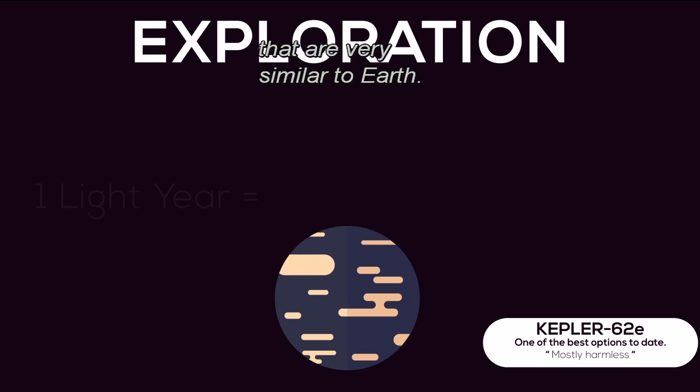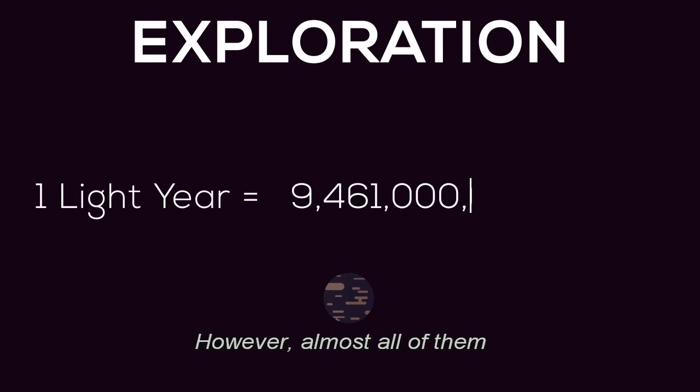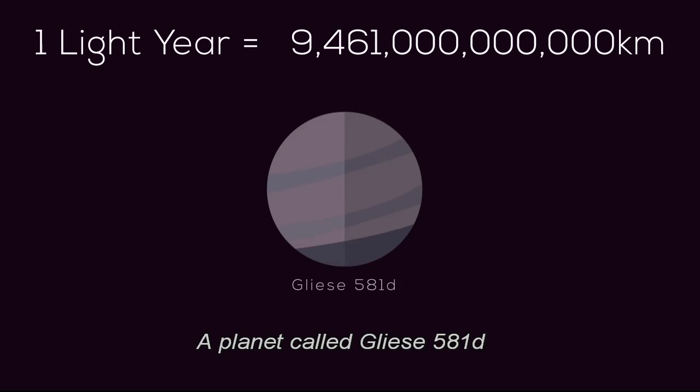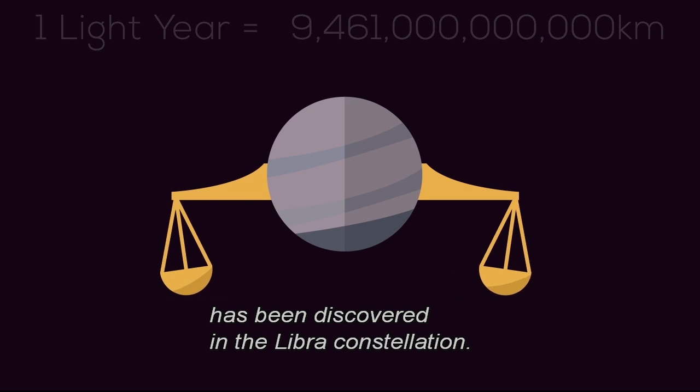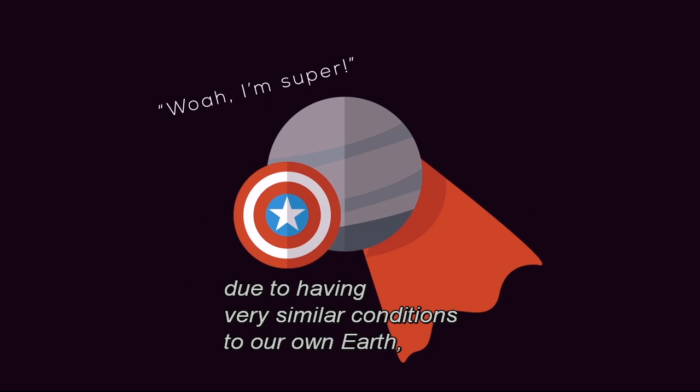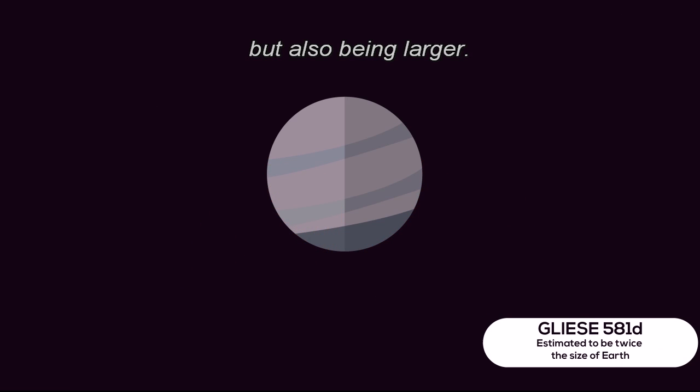Scientists have found planets that are very similar to Earth, however almost all of them are hundreds of light years away. A planet called Gliese 581d has been discovered in the Libra constellation. It has been given the title of Super Earth due to having very similar conditions to our own Earth, but also being larger.